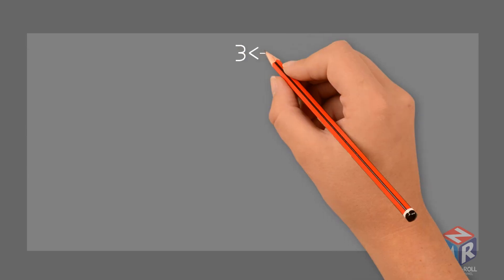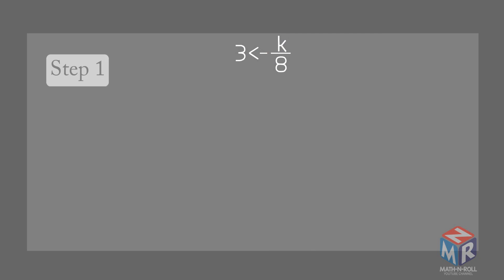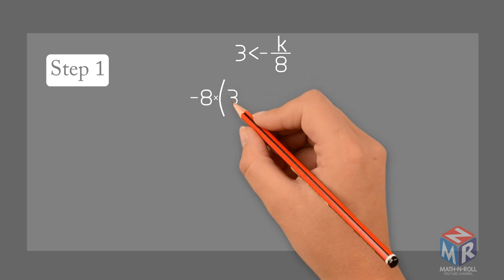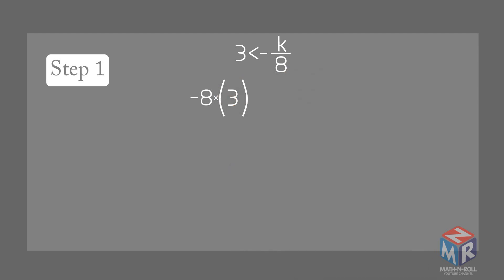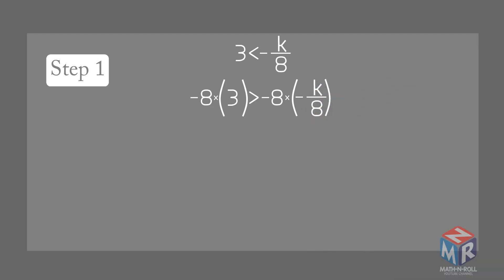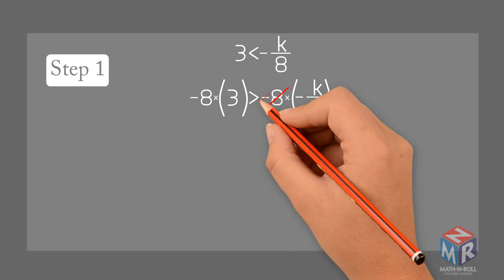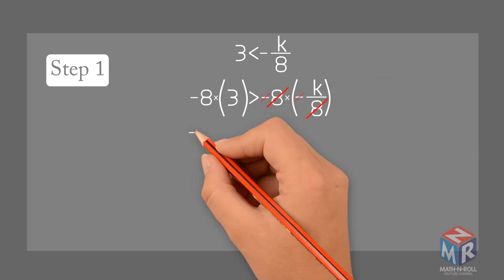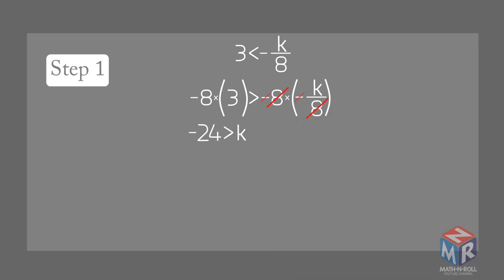3 is less than negative k over 8. Step 1: Solve the inequality. Use the multiplication property of inequality. If you multiply both sides of an inequality by the same negative number, you must reverse the inequality symbol for the statement to still be true. So we multiply both sides by negative 8 because it cancels out with negative 1 over 8. Reverse the inequality symbol. Negative 24 is greater than k. Rewrite negative 24 is greater than k as k is less than negative 24.